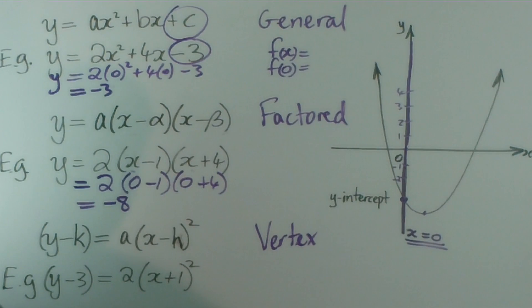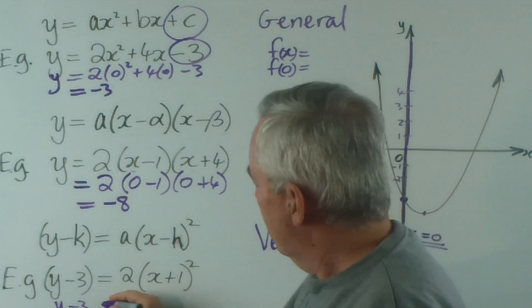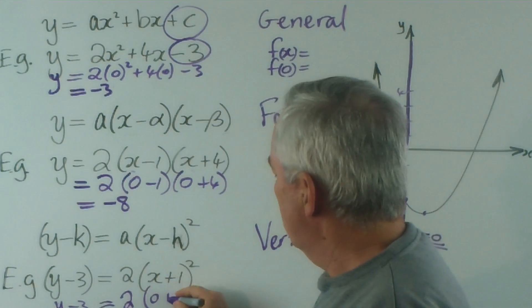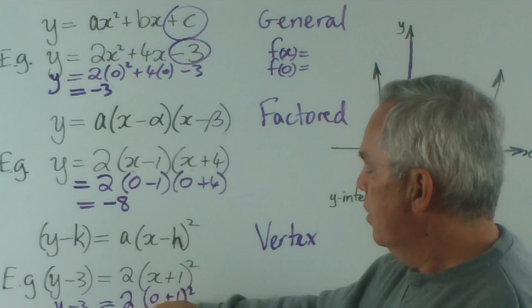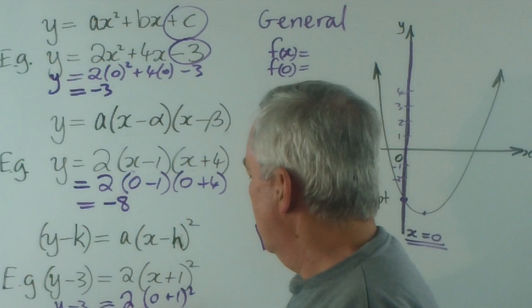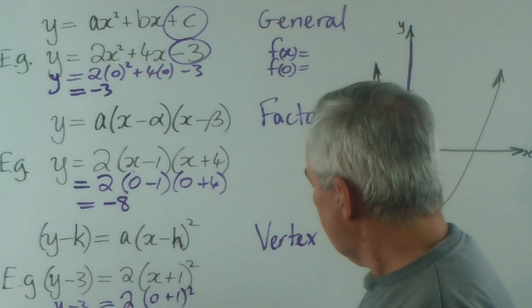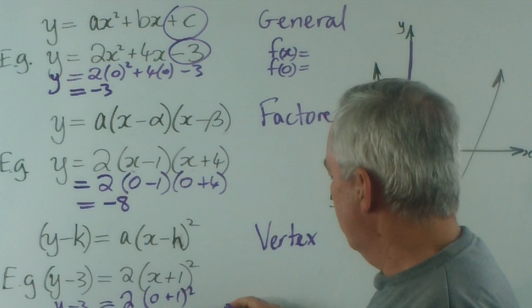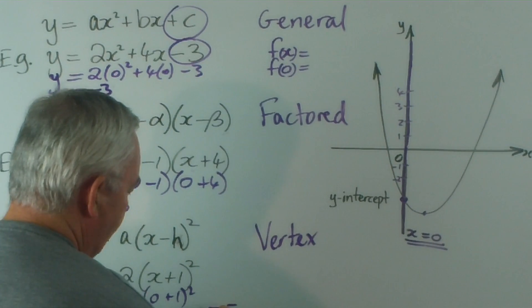In the case of the vertex form, we substitute x equals zero. It's slightly more complicated here because we have a constant on the left-hand side with the y. When we substitute x equals zero, we get (0 + 1)². The zero makes no difference to the constant, so we have 1², which is one, times two is two. We would have to add three to both sides of the equation, so there's a bit more manipulation in this case. The solution is y equals five.